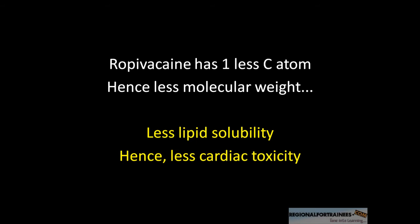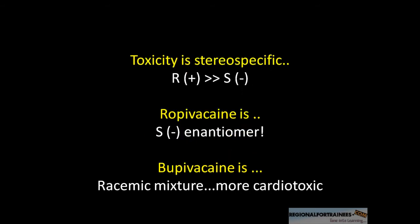Therefore, Ropivacaine is less cardiotoxic than Bupivacaine. Another reason is stereospecificity, with R-plus stereoisomers being more cardiotoxic than S-minus stereoisomers. Because Ropivacaine is a S-minus enantiomer, it is less cardiotoxic than Bupivacaine, which is a racemic mixture.